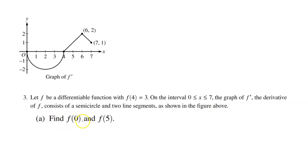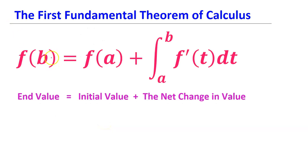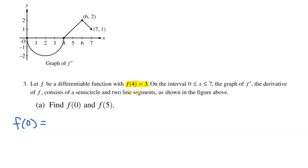Part A: find f at 0 and f at 5. In a calculus class, when they ask you to find the value of the original function at a particular point, you will almost always use the first fundamental theorem of calculus. The end value you are looking for, f at b, will equal some initial value f at a, plus the integral of the derivative from a to b. In this case, they gave us the initial value: f at 4 equals 3.